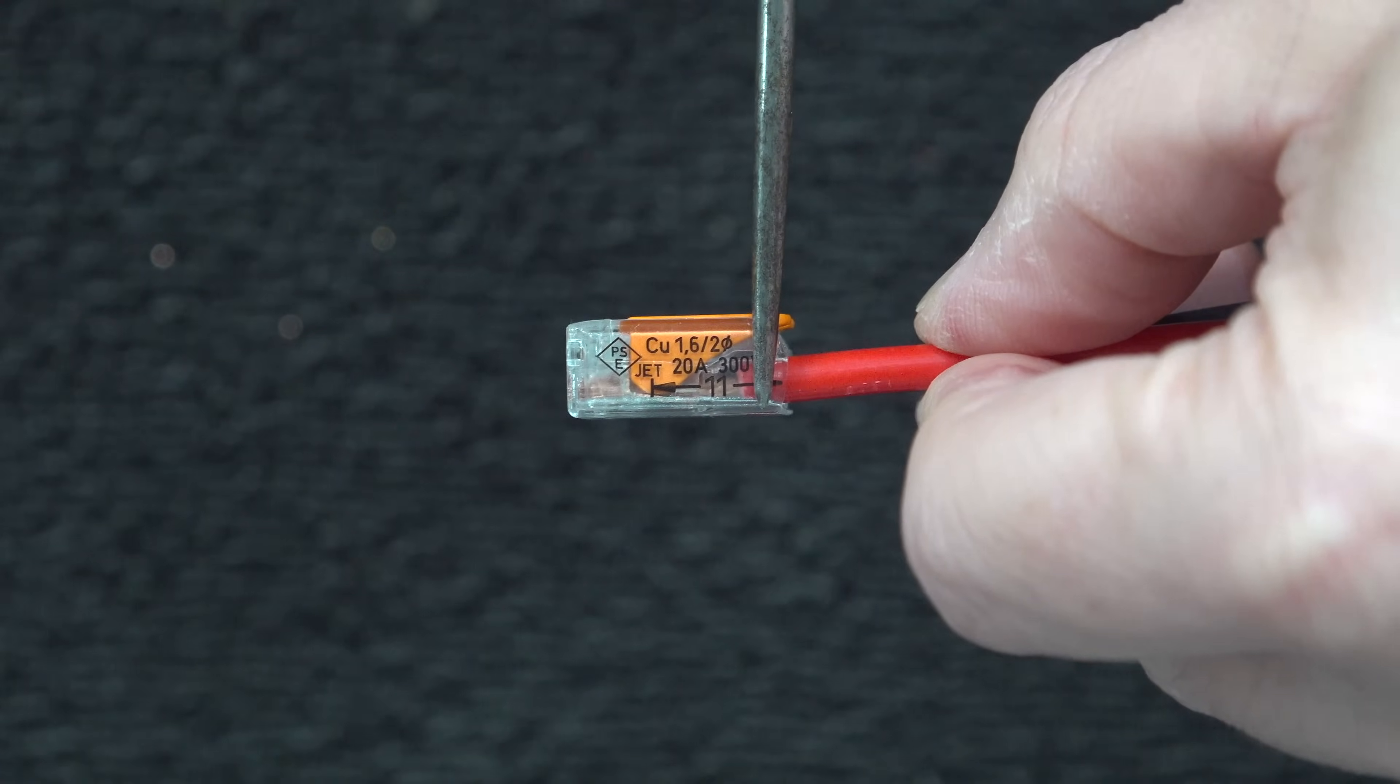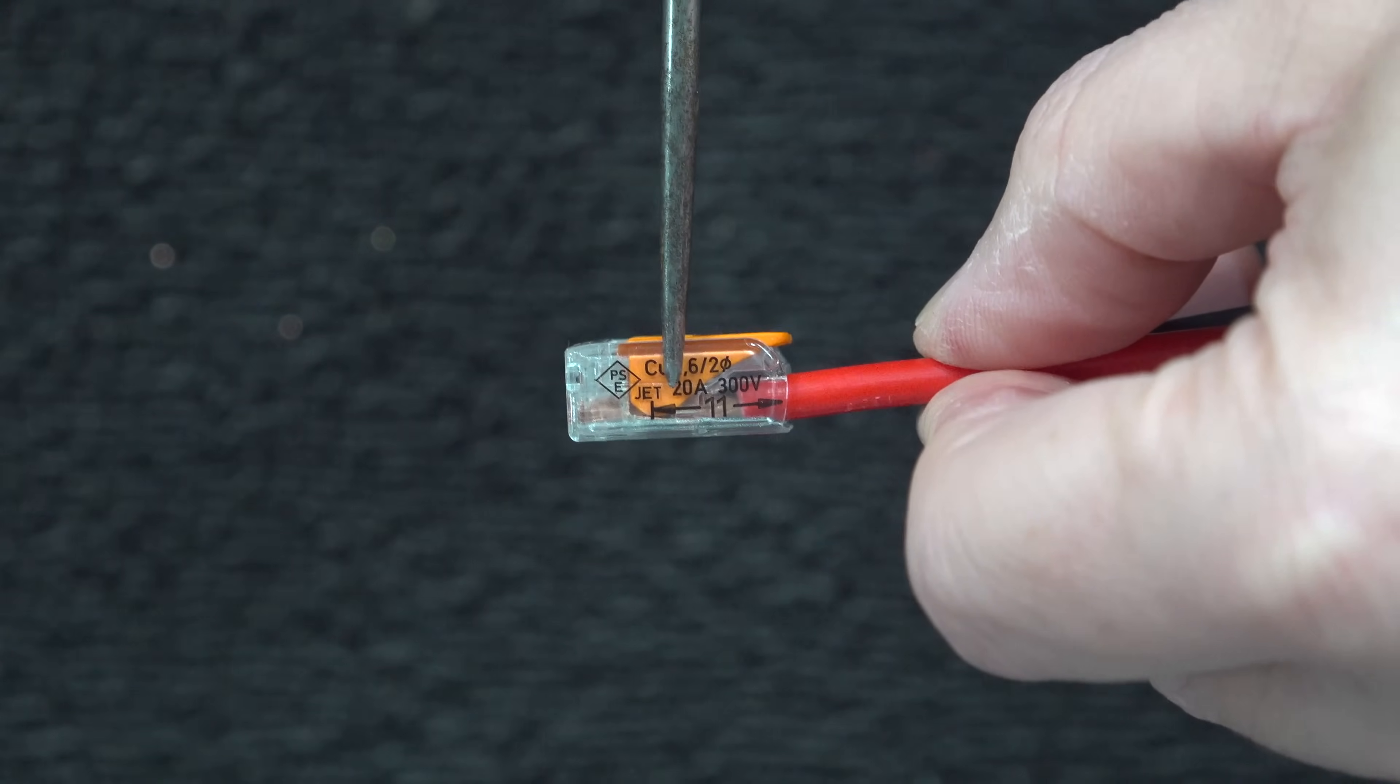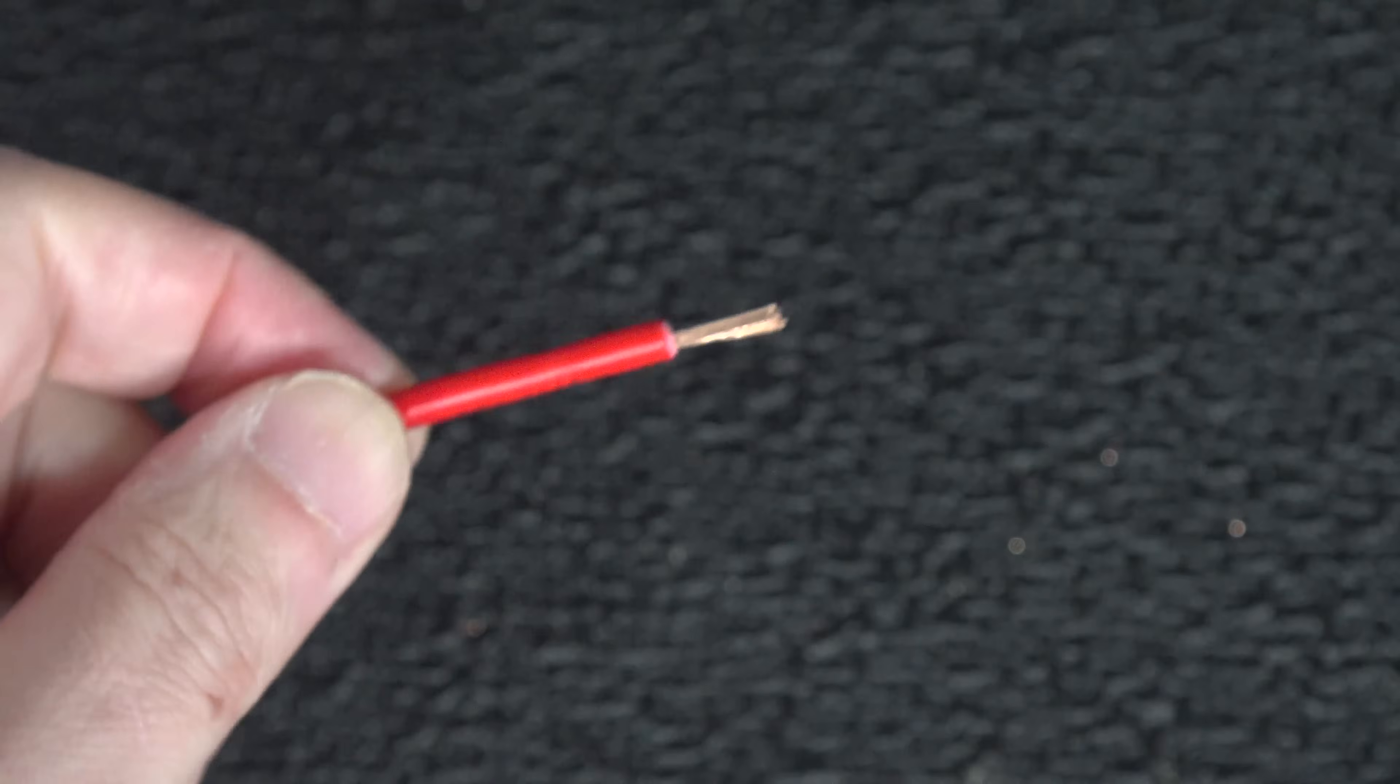But these connectors have a bunch of other tricks. On the side is a strip gauge. So now if you want to know how much wire to strip, you can just put your wire next to the connector, kind of mark it with your thumb, and then when you put it in your wire strippers, you'll strip the exact amount of insulation every single time.